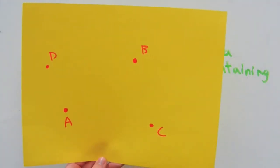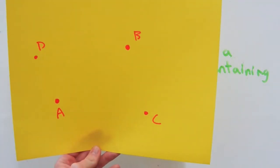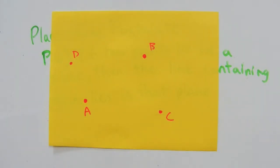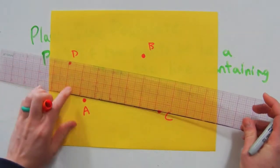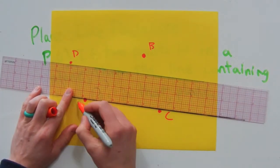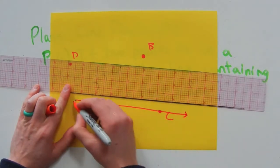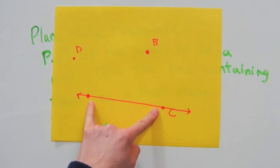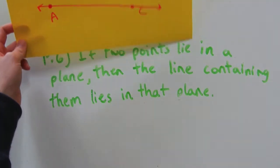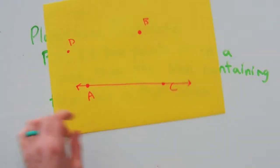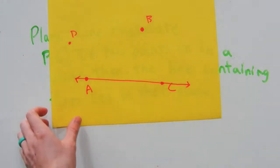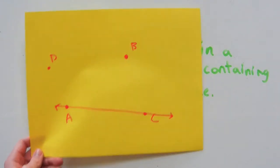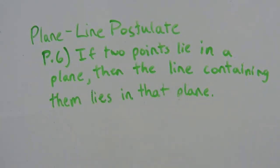You can see our plane made up of at least three non-collinear points. However, you only need two points to make a line, so we can draw a line from A to C. These points A and C both lie in the same plane, and the line AC, because A and C are contained within that line, also lies in the same plane. And that is the plane line postulate.